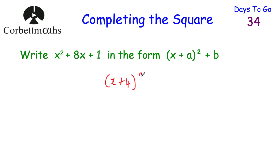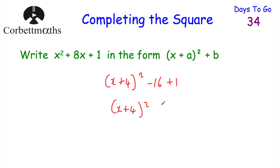Then we take away this number squared: 4 squared is 16, so we do minus 16. Then we put the constant on the end — here we had plus 1, so plus 1. Simplifying: (x + 4)² minus 16 plus 1 gives minus 15. So x² + 8x + 1 written in completed square form is (x + 4)² − 15.